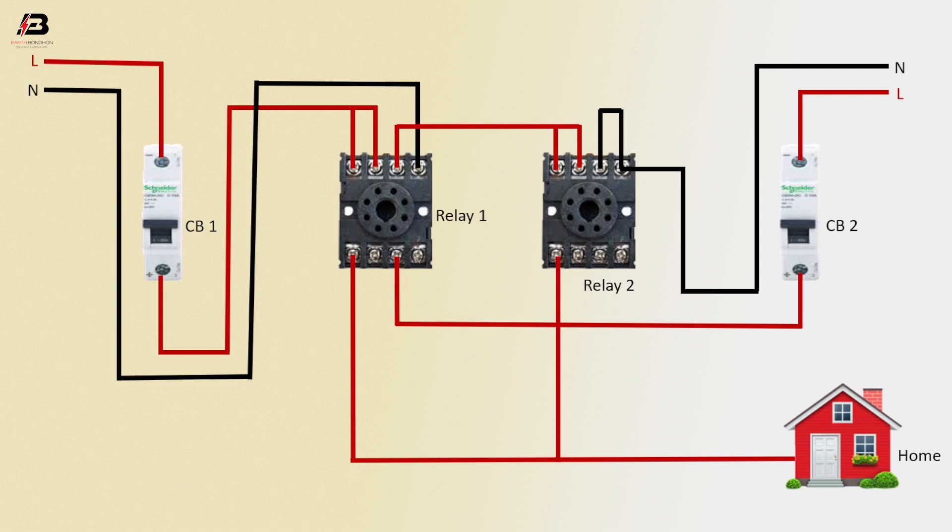Phase Connection to Relay 2, Neutral Connection from Relay 1 to Connect Home Load. Now the circuit is ready for you.